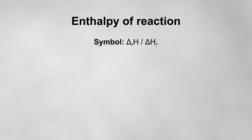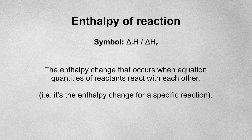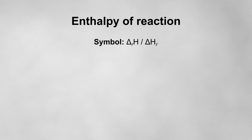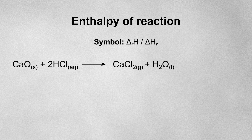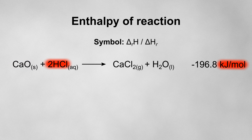The enthalpy of reaction is the enthalpy change that occurs when equation quantities of reactants react with each other. In other words, when you're given a specific reaction, it's the enthalpy change for that specific reaction. For example, the enthalpy of reaction for when one mole of calcium oxide reacts with two moles of hydrochloric acid is −196.8 kJ/mol. This particular enthalpy change is negative, indicating the reaction is exothermic. The units still refer to either per one mole of calcium oxide or per two moles of hydrochloric acid, as we're using equation quantities.